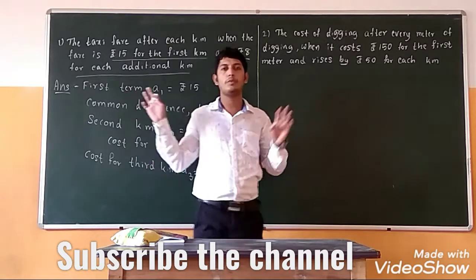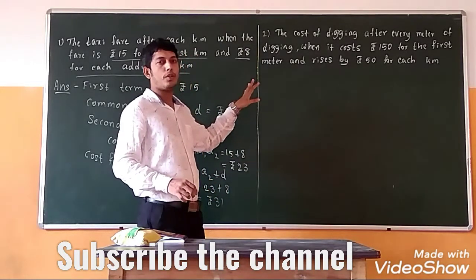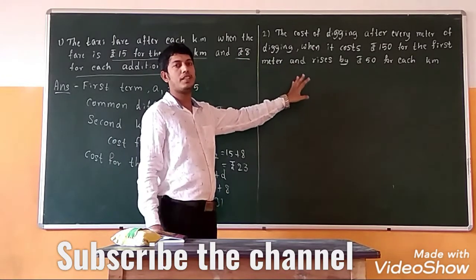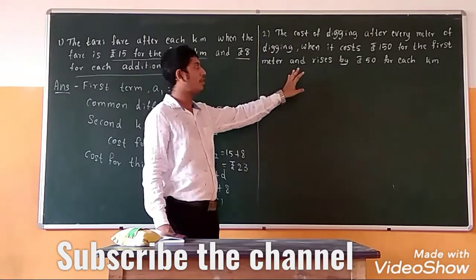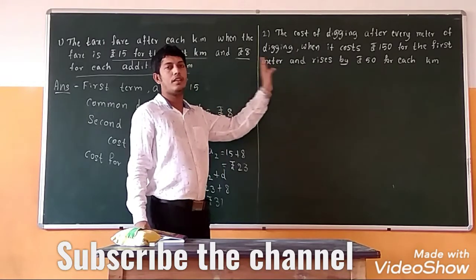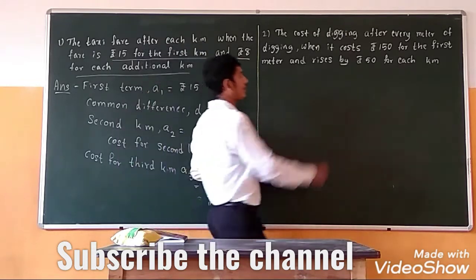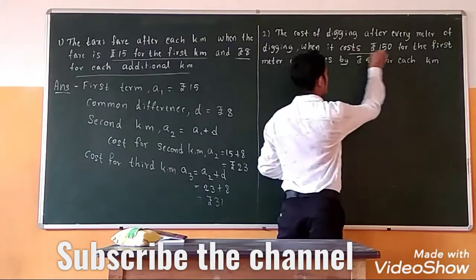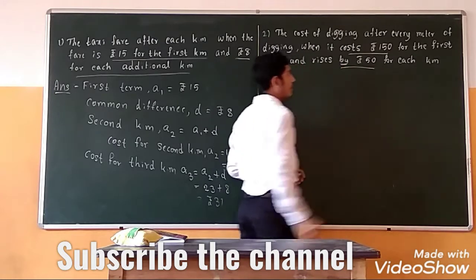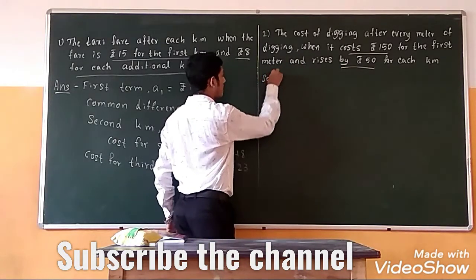Both problems are similar. According to the definition of arithmetic progression, an AP is a list of numbers in which we get the next number by adding a fixed value to the preceding term, except the first term. Here the first term is 150 and the common difference is 50.